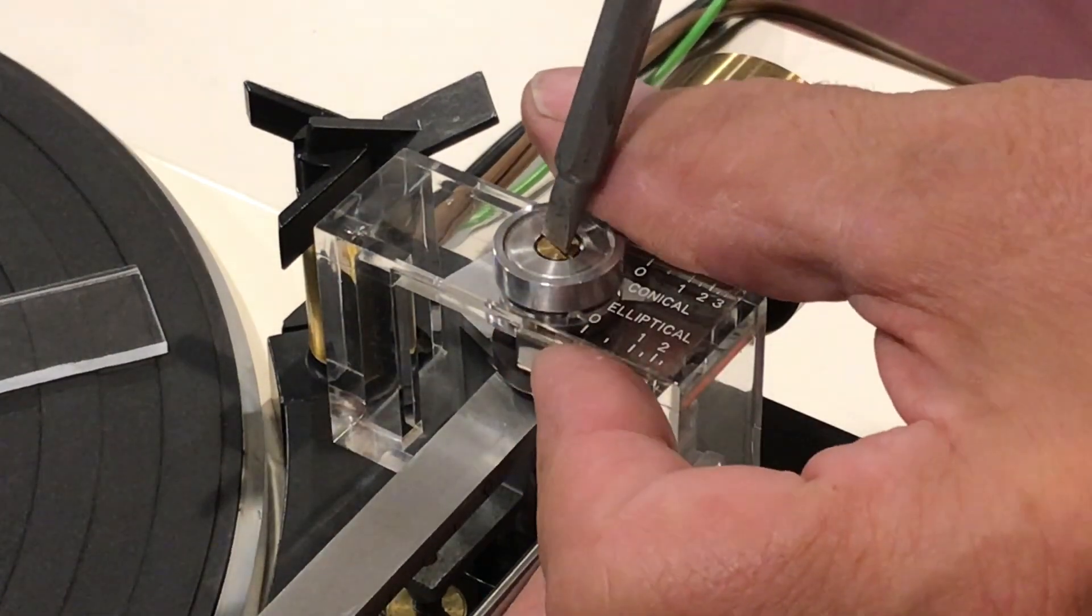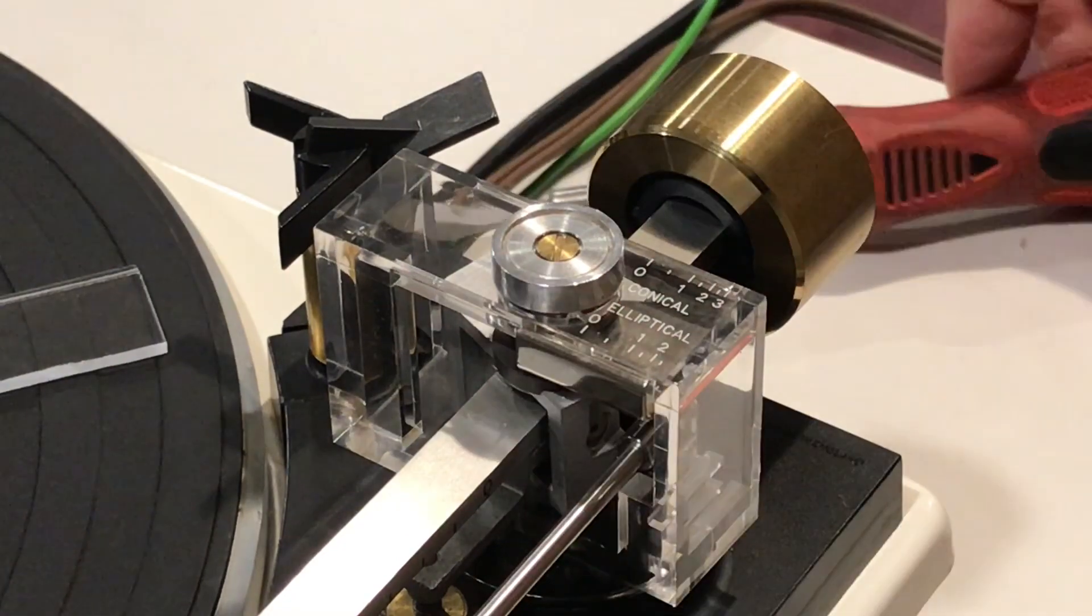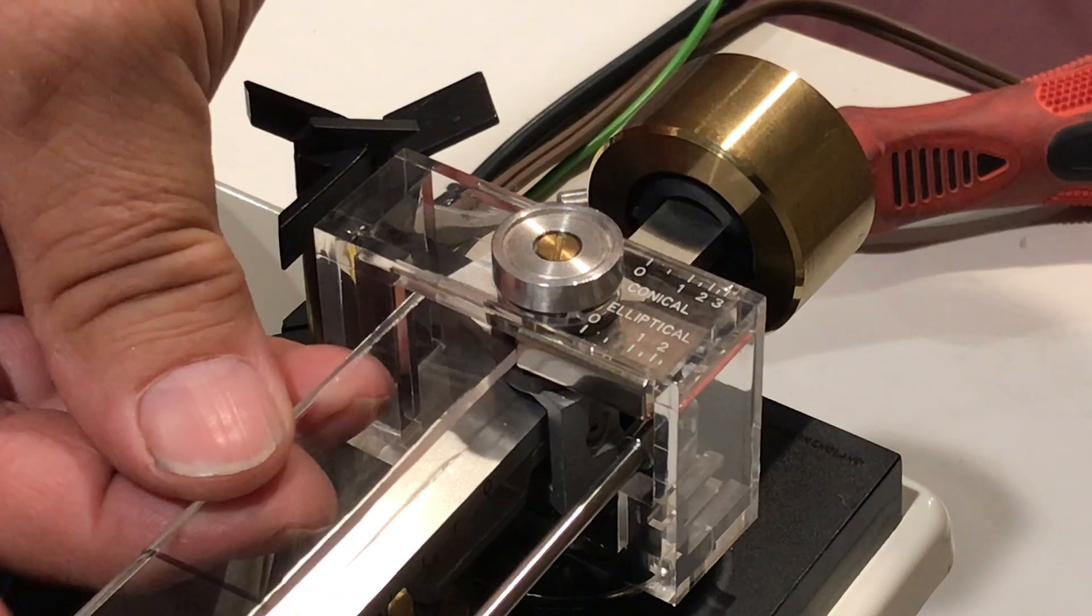Once you've got the gap that you want to achieve, go back and tighten up the brass screw on the top. I double checked it just to make sure nothing moved.